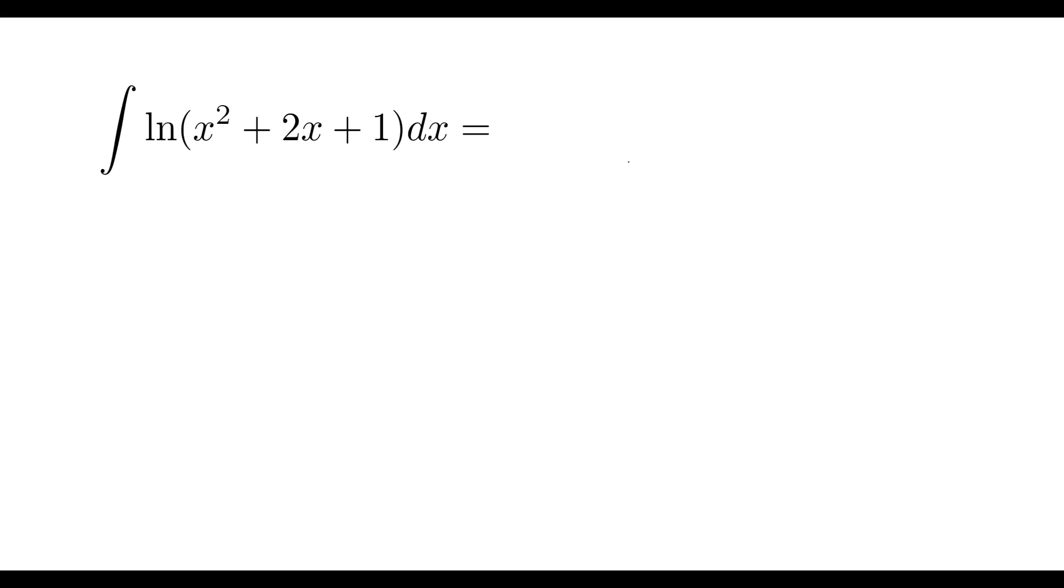Anytime we see a problem like this involving a logarithm, normally you know you're going to be either using a u substitution or integration by parts, or probably a combination of both depending on what the question looks like. So for this question we are definitely going to be using integration by parts. So let's quickly remember, what is the integration by parts formula? Well, it's the integral of u dv is equal to uv minus the integral of v du.